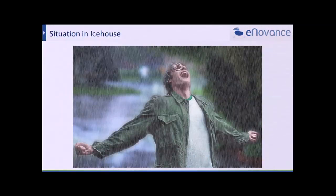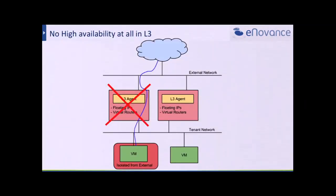So what's the problem in the L3 agent current implementation? If you use the L3 agent in production, your tenants will create virtual routers and all the virtual routers will be scheduled on L3 agent nodes. The current problem is that if you lose an L3 agent — one or two — the virtual machines will lose connectivity from external networks and also won't be able to reach the internal networks between tenant networks. That's a big issue in production.